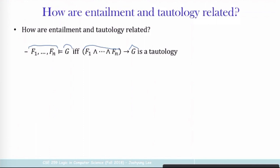A slightly different way to say the same thing: how do you know that G is not entailed from F1 to FN? You can say the right-hand side is not a tautology, meaning that there is one interpretation that satisfies F1 to FN but does not satisfy G.